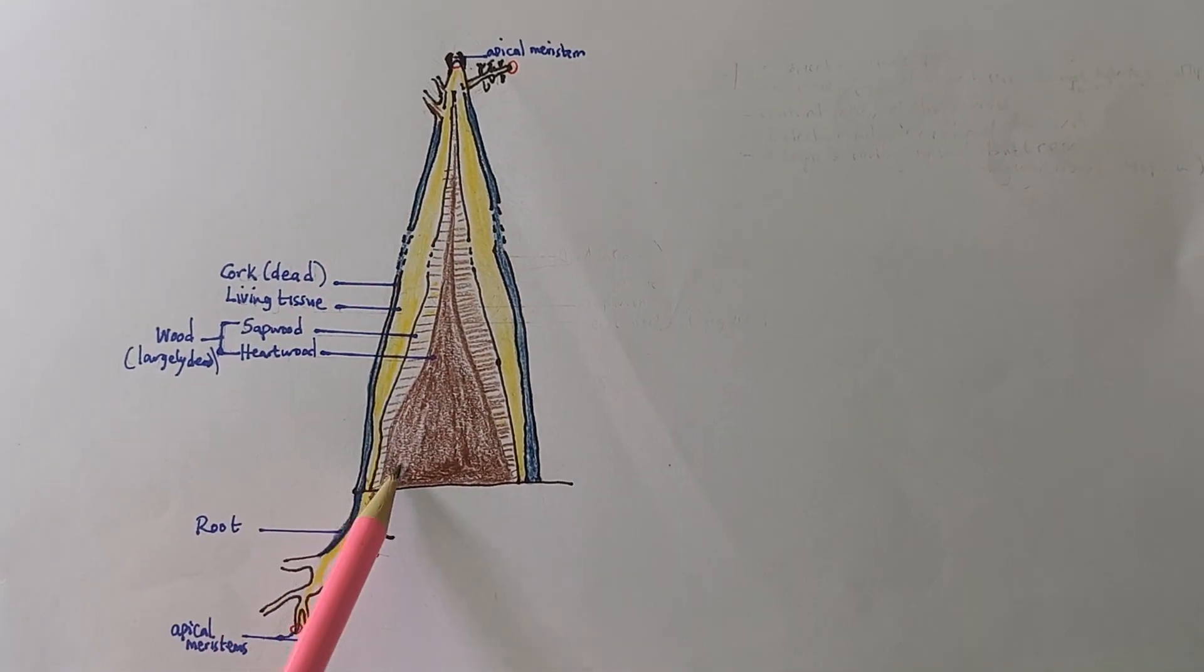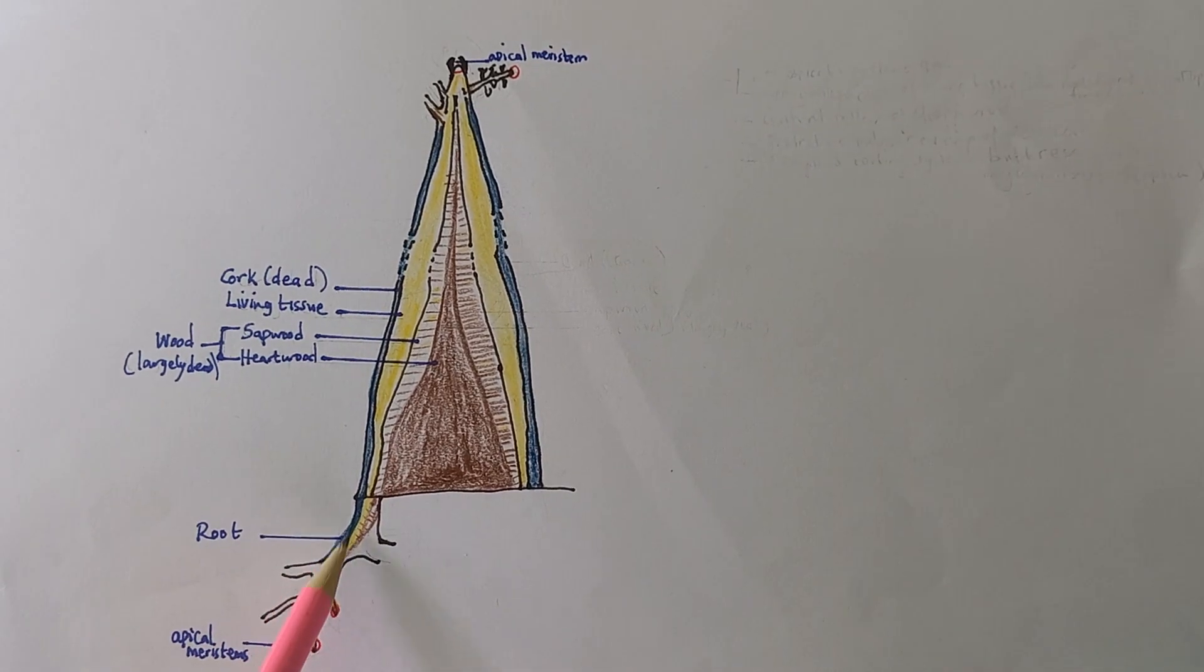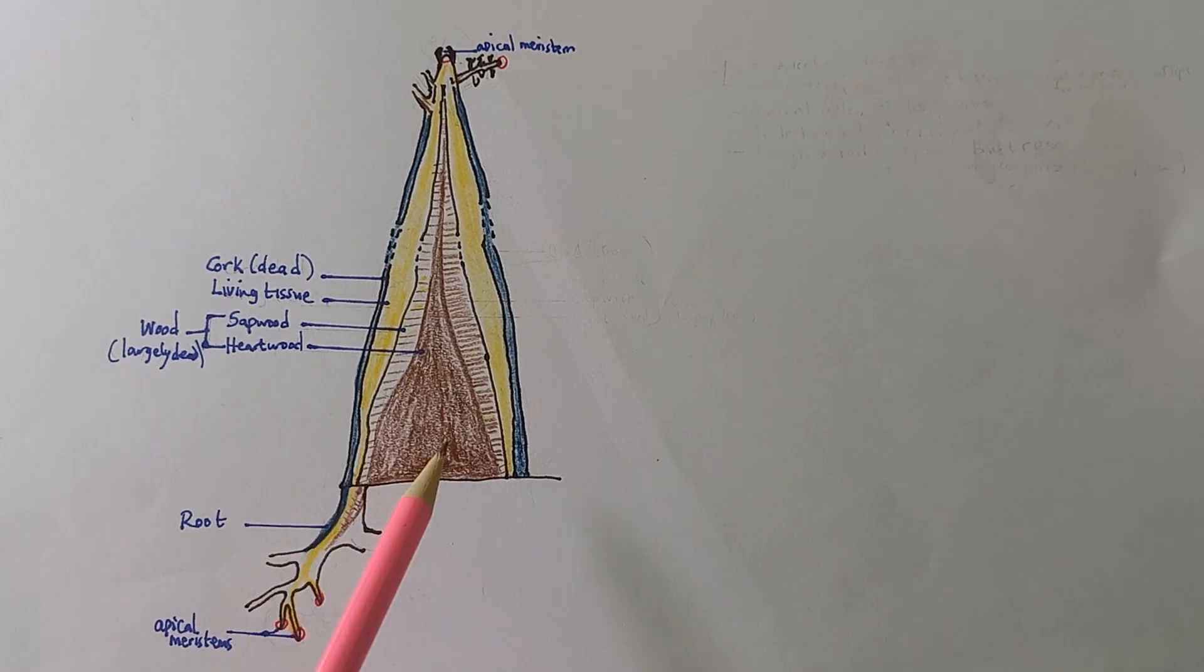Mineral salts and food. Rapid conduction up and down the plants. These are the three major things.